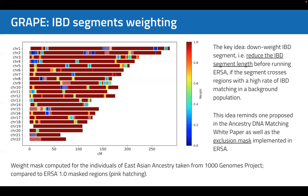Our new weighting approach is intended to address this problem. The key idea is to downweight the IBD segment — that is, to reduce the IBD segment length — if the segment crosses chromosome regions with a high rate of matching in the background population.